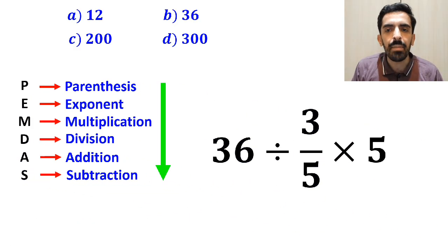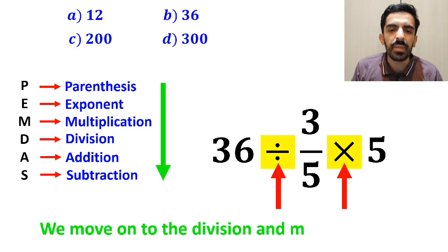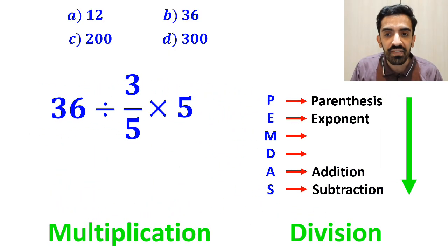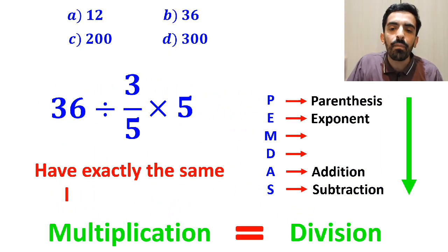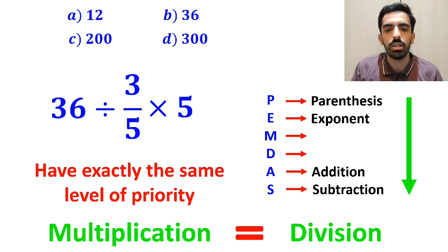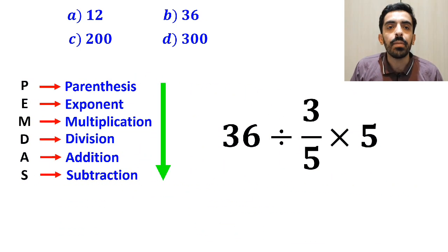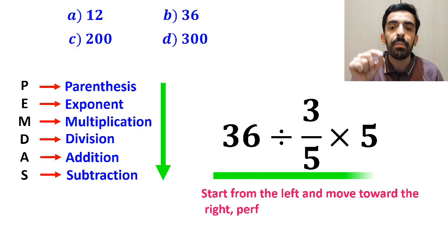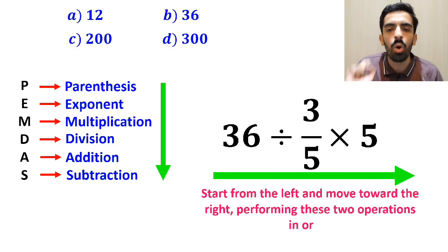In the next step, we need to move on to the division and multiplication. However, it's very important to note that multiplication and division have exactly the same level of priority in the PEMDAS rule. In this situation, the best approach is to start from the left and move toward the right, performing these two operations in order.